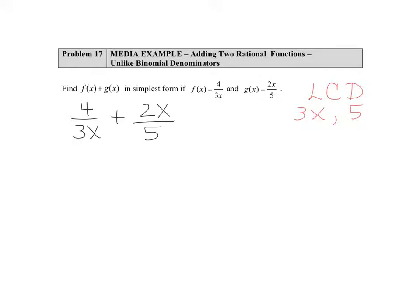So in 3x we basically have two factors, 3 and x, and in 5 we have 5. So we're going to put them together as 3 times x times 5, or more simply written, 15x.